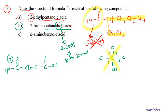Now we complete the structure for 2-bromobutanedioic acid by adding two CH₂ units in the middle. The carbon at position two gets a bromine substituent, and the remaining bond is hydrogen. This gives us the complete structural formula for 2-bromobutanedioic acid.